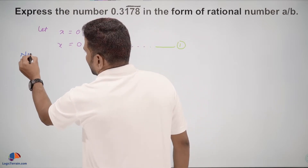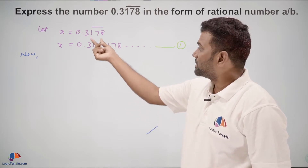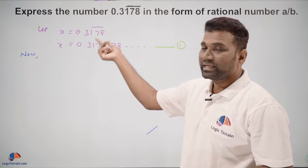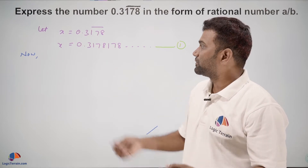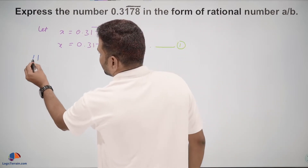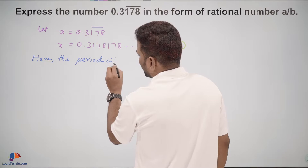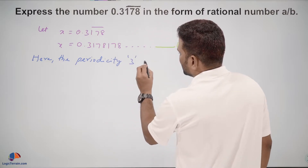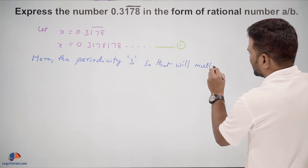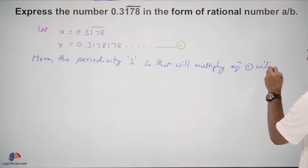Now we will look at the periodicity. What does periodicity mean? After the decimal point, how many digits are repeating? Here, how many digits are repeating? There are 3 digits which are repeating, so the periodicity here is 3. Therefore we will multiply equation 1 by 1000.